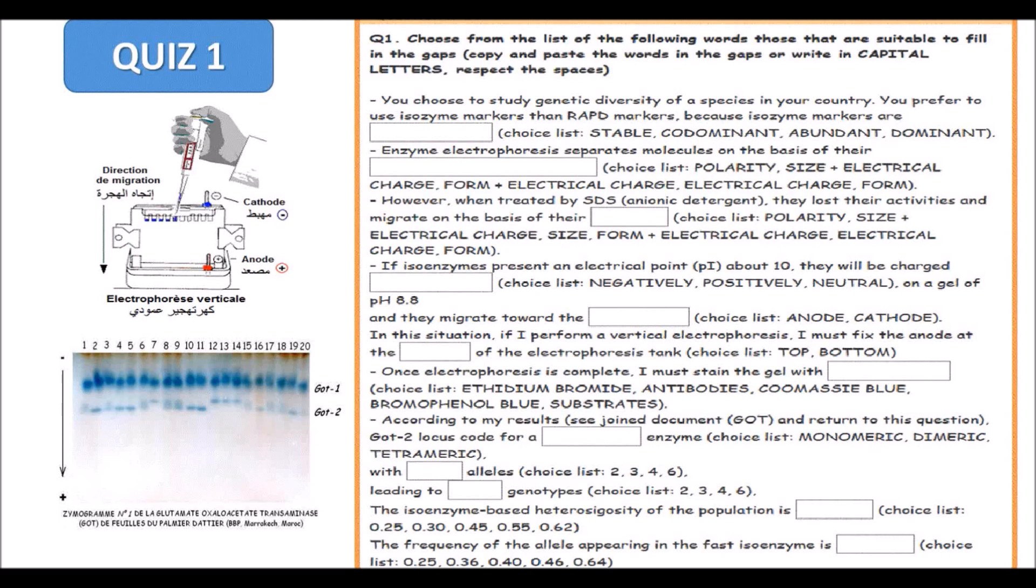In this video I would like to give some answers to the quiz. Choose from the list of following words those that are suitable to fill in the gaps. You choose to study genetic diversity of a species in your country and you prefer to use isozyme markers than RAPD which is based on PCR, because isozyme markers are stable, codominant. We have to choose codominant character for the isozyme markers, compared to the RAPD markers which are not codominant - they are dominant markers.